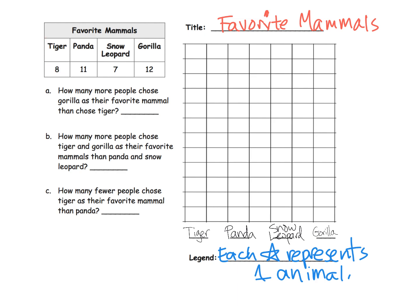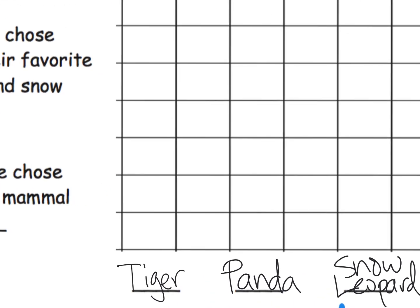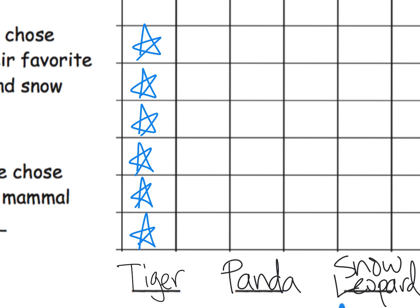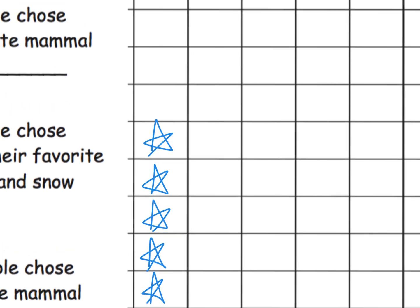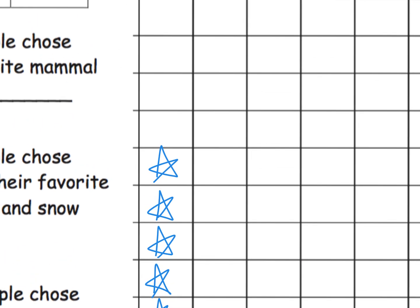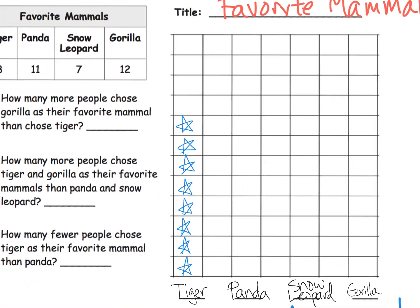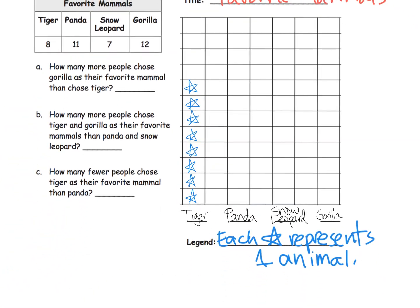We have eight tigers, so that means we're going to put in eight stars: one, two, three, four, five, six, seven, eight. There are our eight stars to represent the eight tigers.